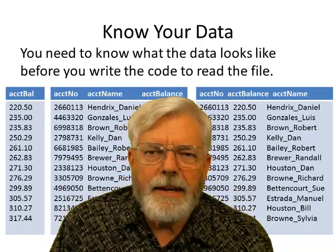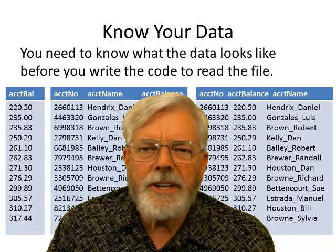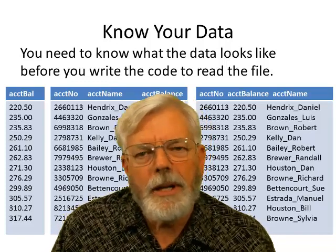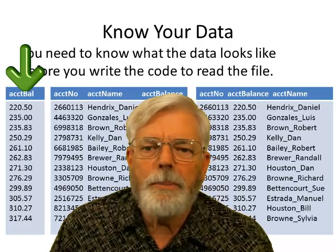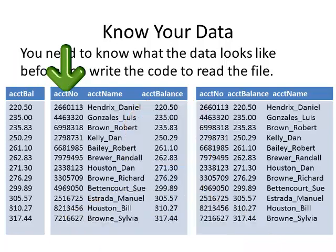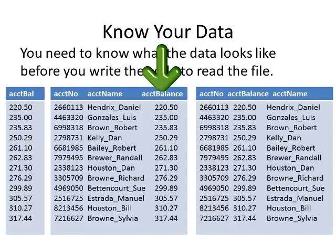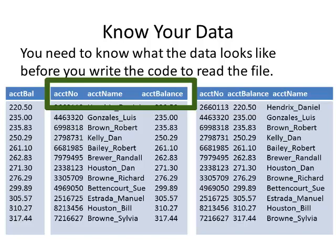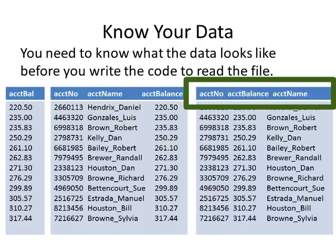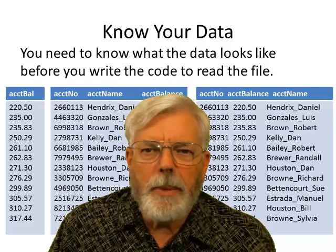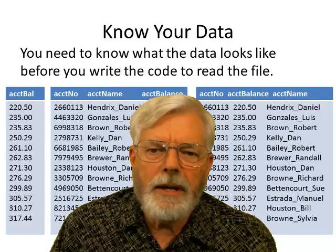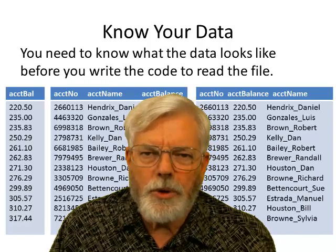I need to know what the data looks like before determining either the mean or the median. If I have a file that contains only account balances, that's easy. However, I might have a file with account number, account name, and account balance — and I'm only interested in the account balance. The data could be organized as account number, account name, account balance, or possibly account number, account balance, account name. I need to know how the data is organized before I write the program.